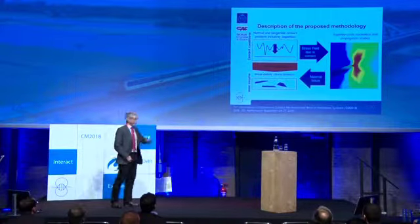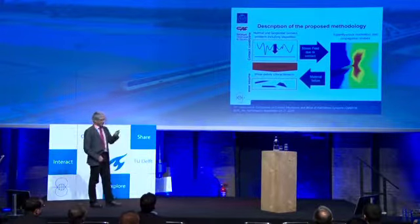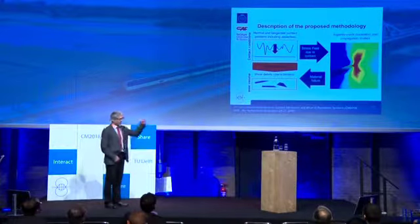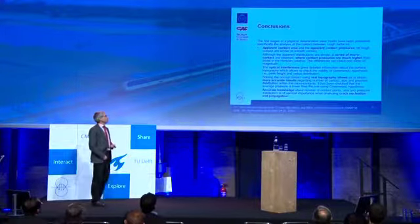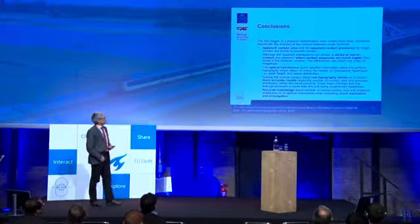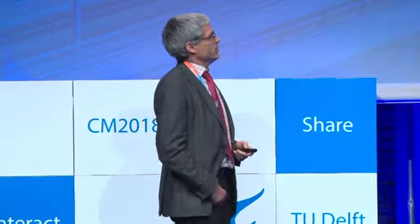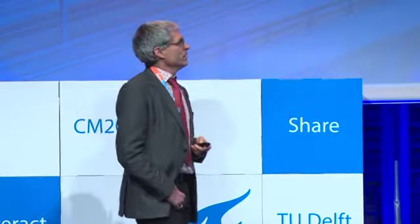Coming back to the flow diagram, that covered only the very first part. The next steps would be the solution of the tangential problem and then the finite element calculation. To conclude: the apparent contact area and apparent contact pressure for rough contact are similar to smooth contact as expected, but due to a series of micro-contacts on the asperities the contact pressure locally can be about 10 times higher than with the Hertz solution.